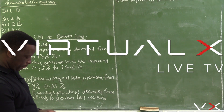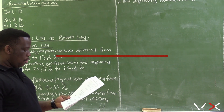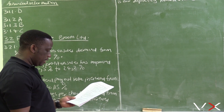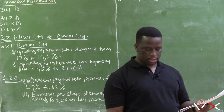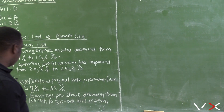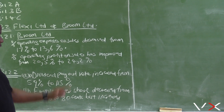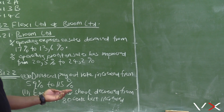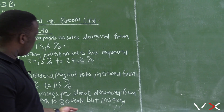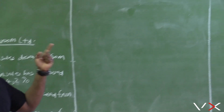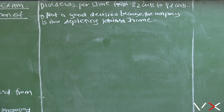Question 3.2.2 asks us to comment on the dividend payout policy of Flexi Ltd and explain why this is an irresponsible change in the policy, providing two points. The dividend payout rate increased from 59 percent to 115 percent. Earnings per share decreased from 138 cents to 80 cents, but dividends per share increased from 82 cents to 92 cents.